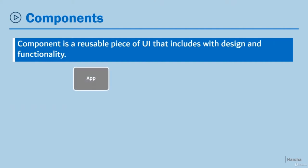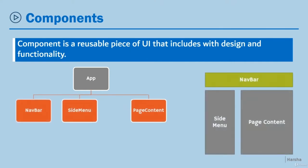By default, every application should contain a root-level component called the app component. This app component may have children. For example, in a real-world application we have various sections such as a navbar, side menu, and page content, and those are represented as child components.